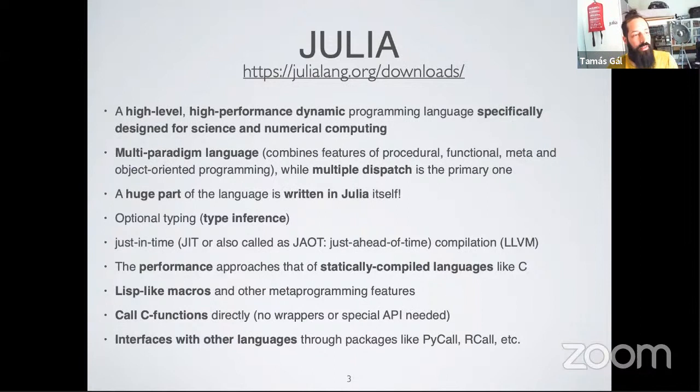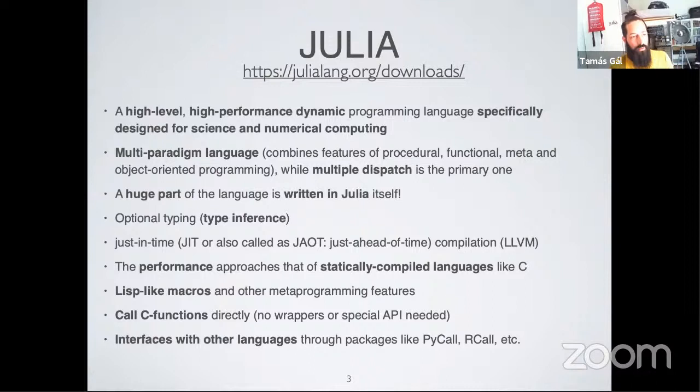Julia is a high-level and high-performance dynamic programming language specifically designed for science and numerical computing. It's a multi-paradigm language combining procedural, functional, meta, and object-oriented programming, but its main paradigm is multiple dispatch — that's what Julia is known for.